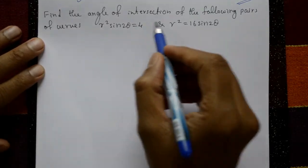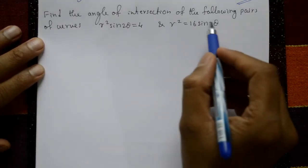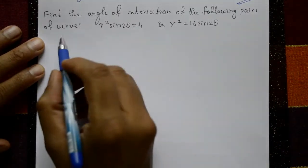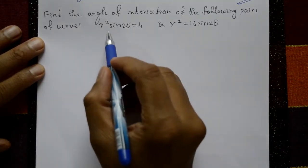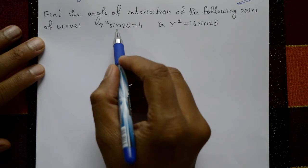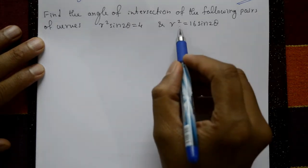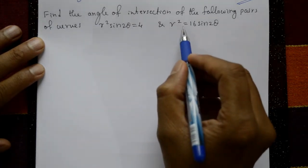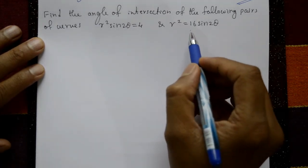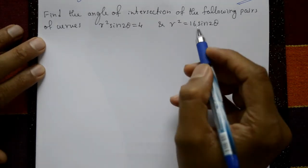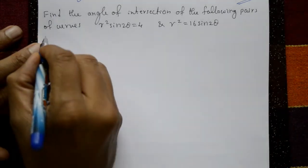Find the angle of intersection of the following pairs of curves: R² sin2θ = 4, and R² = 16 sin2θ.